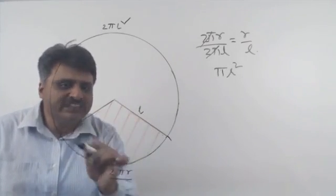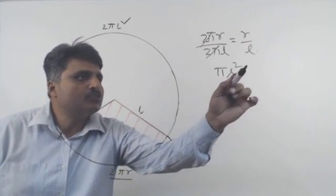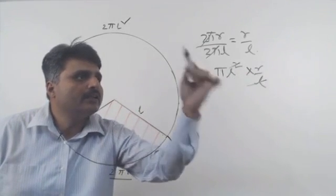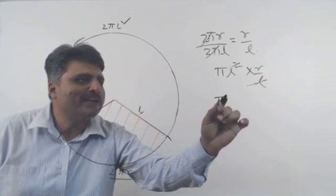So this area of this segment is pi L squared into R by L, which makes it pi R L.